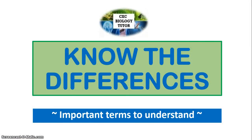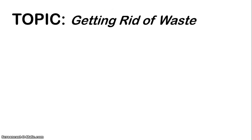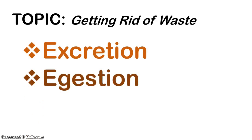It's Michelle, your CXC biology tutor here again. Welcome back to the Know the Differences series, in which I go through a few important terms that you need to understand. In this video I'll be looking at getting rid of waste, and we're going to be focusing on these two processes which some people tend to get mixed up: excretion and ingestion. You really need to know the differences between these two processes, which both remove different types of waste from the body.